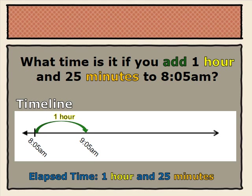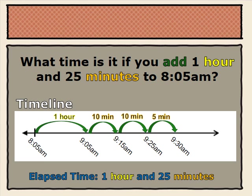Now, we'll need to add our 25 minutes. We've broken up our minutes into 10, 20, and 5 minutes. So, 9:05 a.m. plus 10 minutes will get us to 9:15 a.m. 9:15 a.m. plus 10 minutes will get us to 9:25 a.m., and 9:25 a.m. plus 5 minutes will get us to 9:30 a.m.